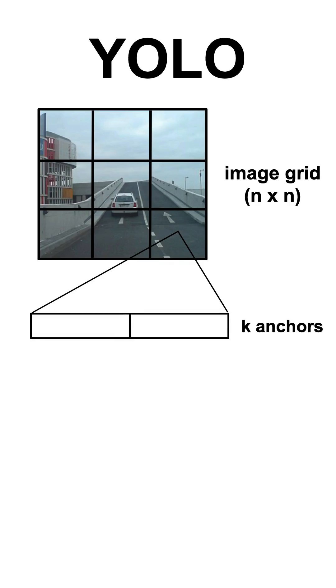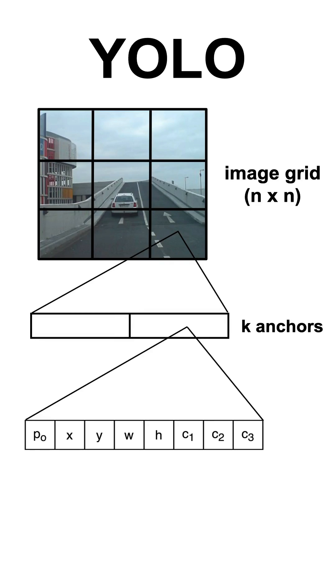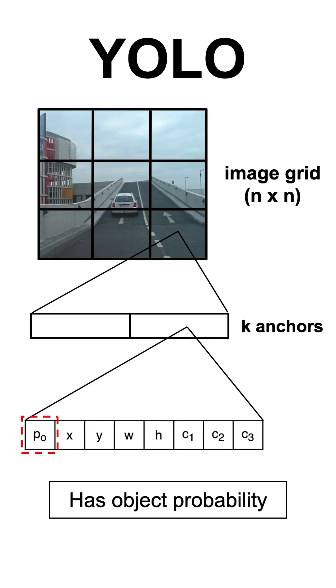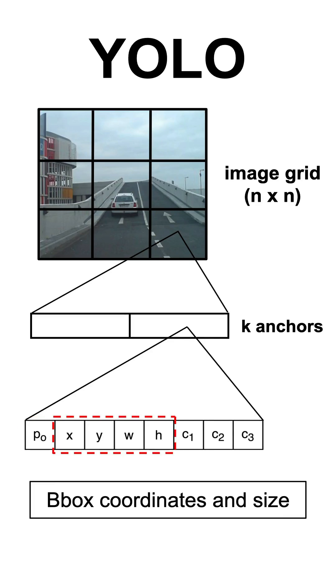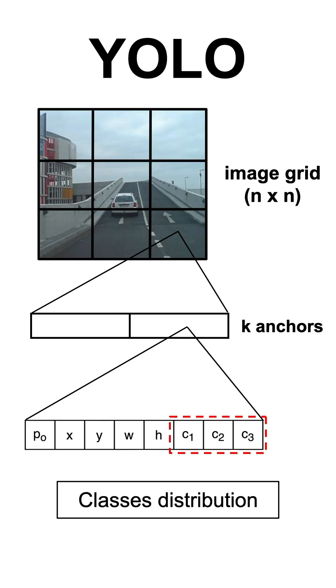More concretely, it divides the image into an N-by-N grid, and for each cell, the model learns to generate key anchors that describe the objects that could potentially be found in that cell, with fields like the probability that this cell has an object, the object bounding box coordinates and size, and the object class distribution.